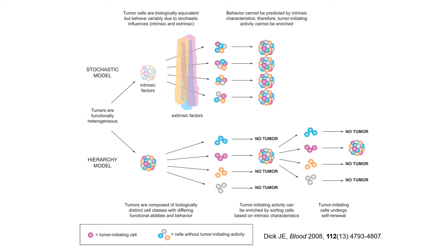Metastasis and long-term sustenance of tumors are dependent upon these cancer stem cells. The bulk of the tumor consists of phenotypically diverse, proliferating progeny of differentiated cancer stem cells. Cancer stem cells themselves have limited potential to proliferate and do not contribute to tumor growth. This is one of the reasons why they are hypothesized to be drug-resistant, as many drugs target rapidly dividing cells. The biological and functional distinctions between different classes of cells make it possible to isolate cell populations enriched for tumor-initiating activity.